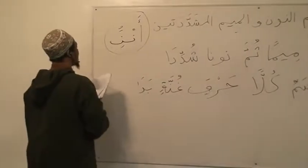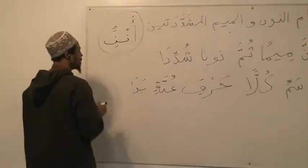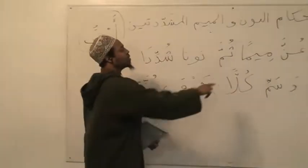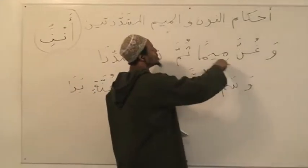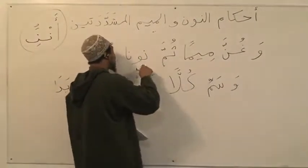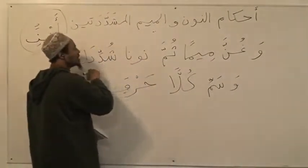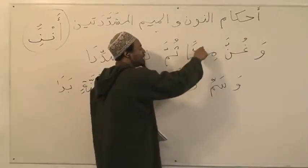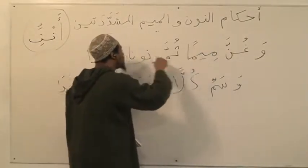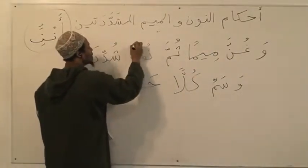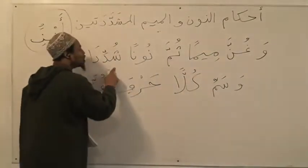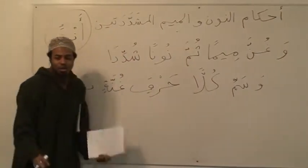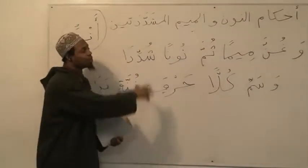This is a simple rule right here. وَغُنَّ مِيمًا ثُمَّ نُونًا شُدِّدًا — Ghunna is going to be in the meem, then the noon, شُدِّدًا, when they have a shiddah on them. That's the only rule we have for this whole section.